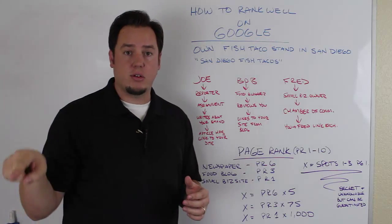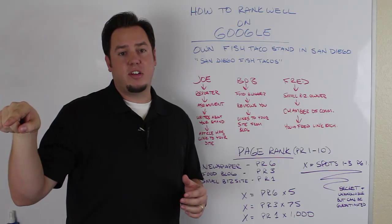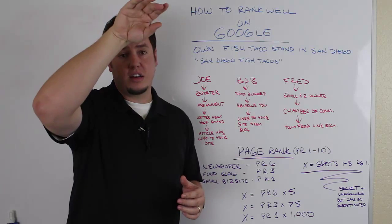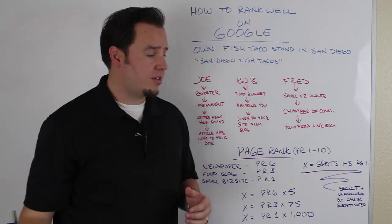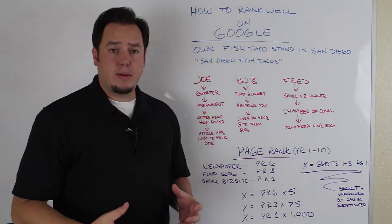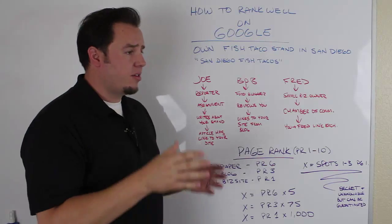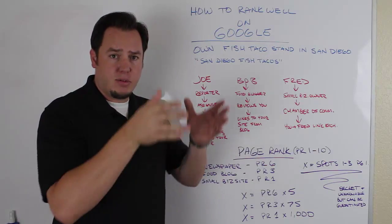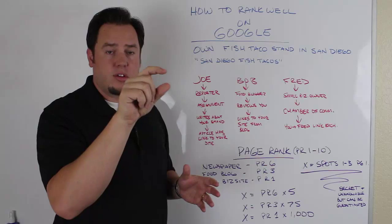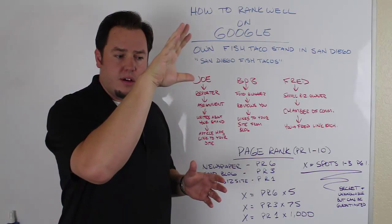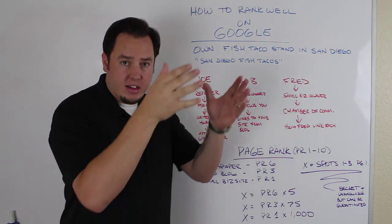And they lose out on any ad revenue from you clicking on any of those ads that appear on the right-hand side of the screen next to the search results or up at the very top there. So that's what Google cares about. Now, the organic results are those 10 results that appear on each page right in the middle with the blue titles over the white background, right there in the middle.